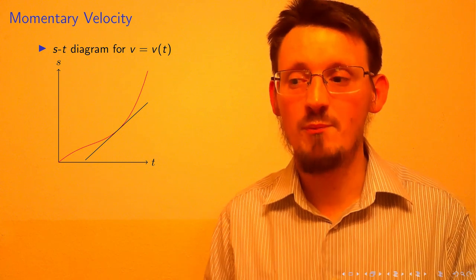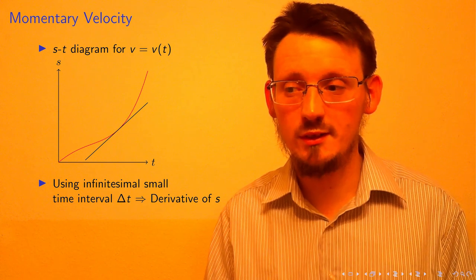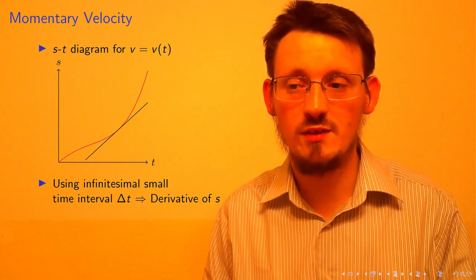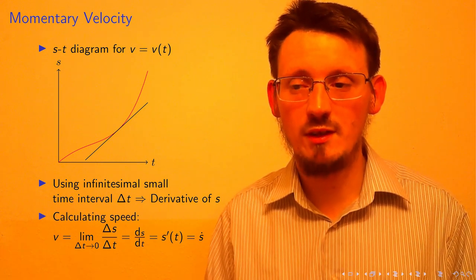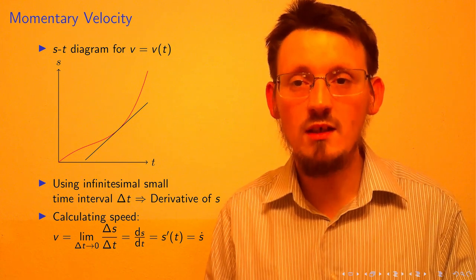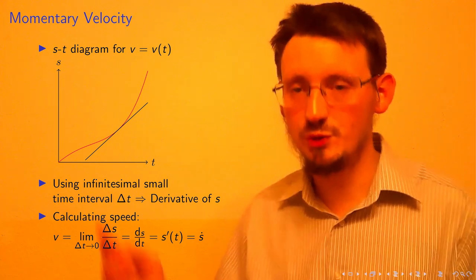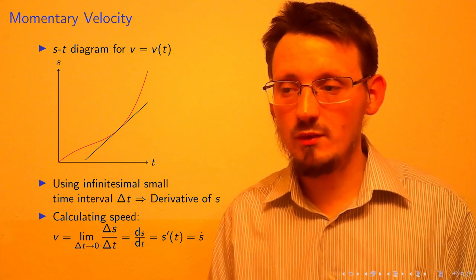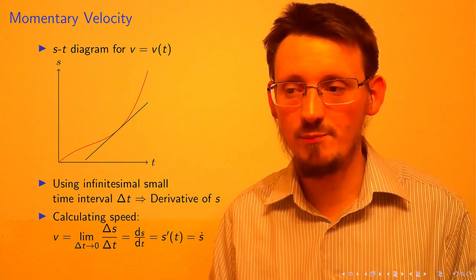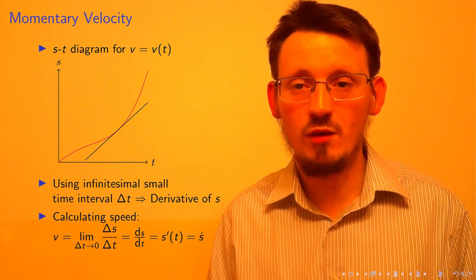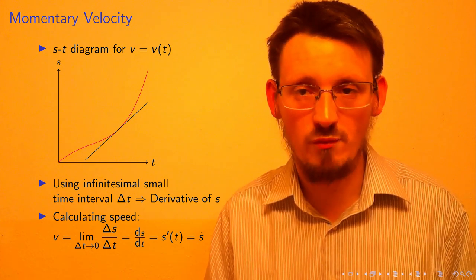In this case, we cannot just simply draw a straight line between two points because this would lead just to an average velocity as I explained in one of the first videos. If we want to obtain the momentary velocity, we have to make the interval, the time interval very short, so much short until it really becomes an infinitesimal small time interval. Mathematically, this means that we have to calculate basically the limit of delta S over delta T with delta T approaching to zero. This is also why it was beneficial to use this delta style of writing, because the limit of delta T approaching zero is just equal to the derivative of S with respect to the variable T.